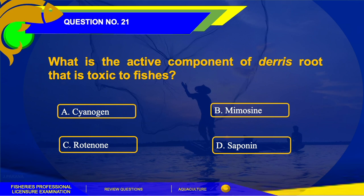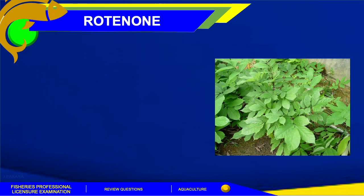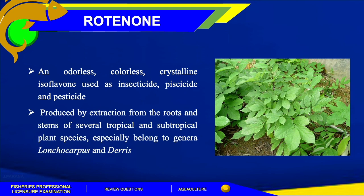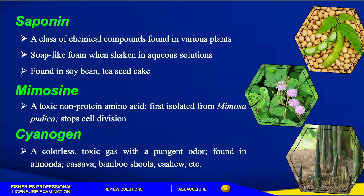The answer for this question is letter C, rotenone. Rotenone is an odorless, colorless, crystalline isoflavonoid used as insecticide and pesticide. It is produced by extraction from the roots and stems of several tropical and subtropical plant species, especially those belonging to genera Lonchocarpus and Derris. Saponins are naturally occurring compounds widely distributed in all cells of legume plants, found in soybean, tea seed cake, and others, producing a soap-like foam when shaken in aqueous solutions.